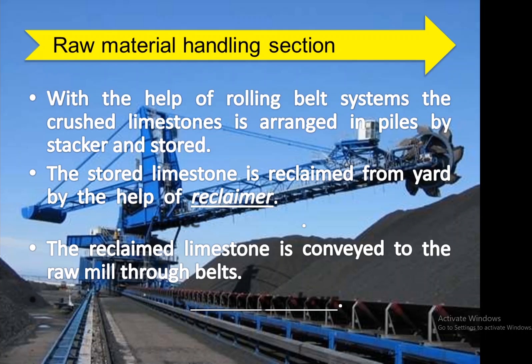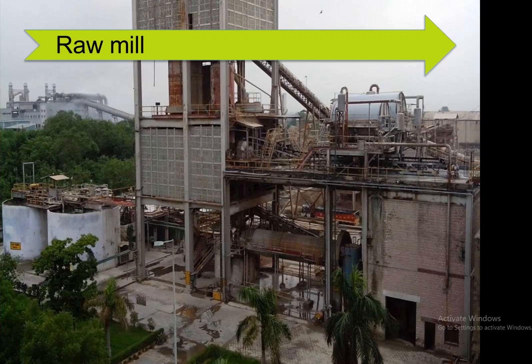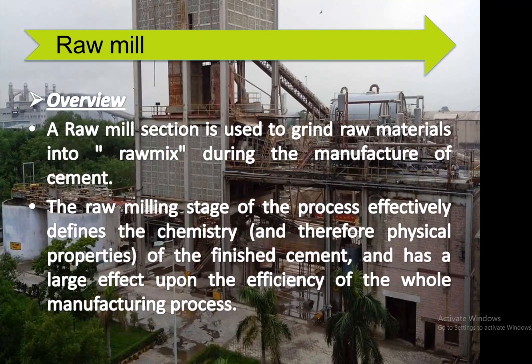The stored limestone is reclaimed from the yard by a reclaimer and conveyed to the raw mill through belts. The raw mill section grinds raw materials into raw mix. During cement manufacture, the raw milling stage effectively defines the chemistry of the finished cement and has a large effect on the efficiency of the whole manufacturing process.